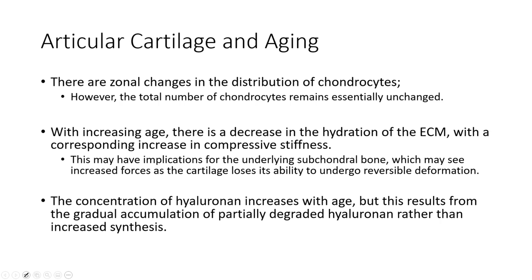With increasing age, there's decreased hydration of the ECM — which happens in many tissues including cartilage — leading to an increase in stiffness, and not the good kind. This may have implications for the subchondral bone because cartilage normally helps dissipate forces since it's essentially a hydrogel. When it stiffens, forces get transmitted into the bone, which can lead to other damage and pain. You also see a higher concentration of hyaluronin, which is why you might see swollen joints more naturally in elderly populations — it's actually from an accumulation of partially degraded hyaluronin that isn't being cleared as efficiently.